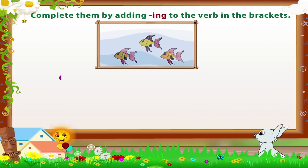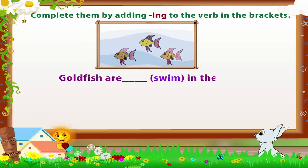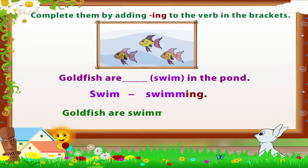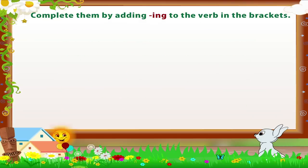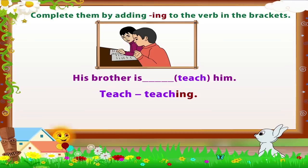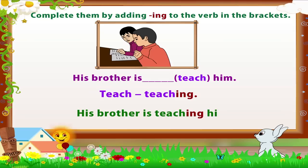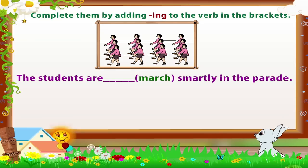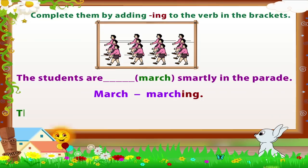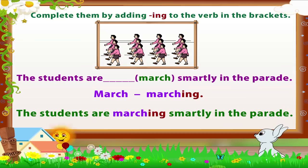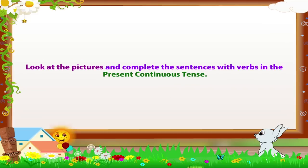Good! 'Goldfish are swimming in the pond' — swim → swimming. 'His brother is teaching him' — teach → teaching. 'The students are marching smartly in the parade' — march → marching. The students are marching smartly in the parade. Very good!